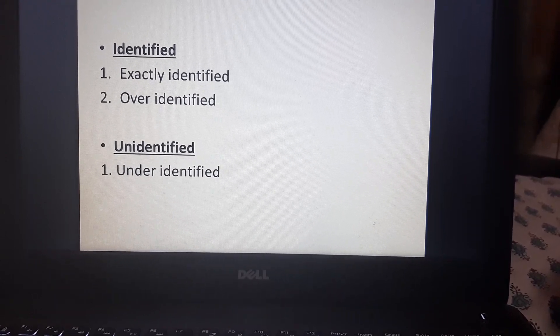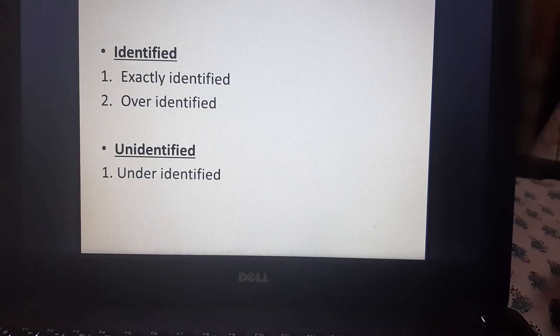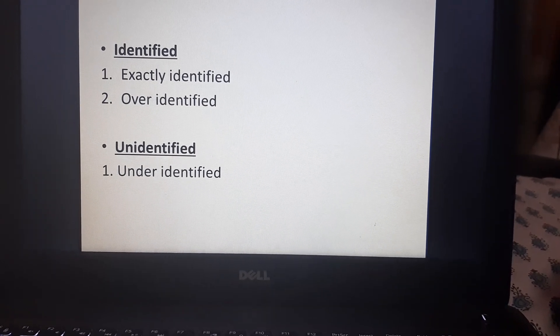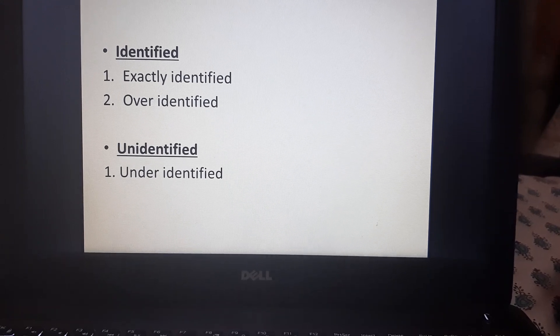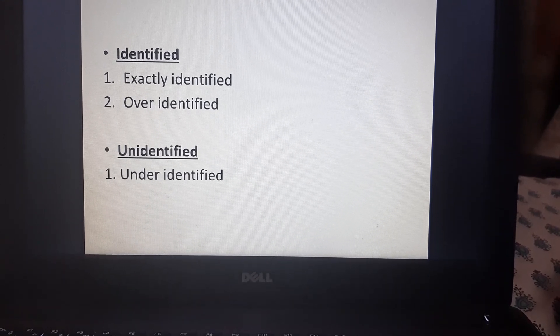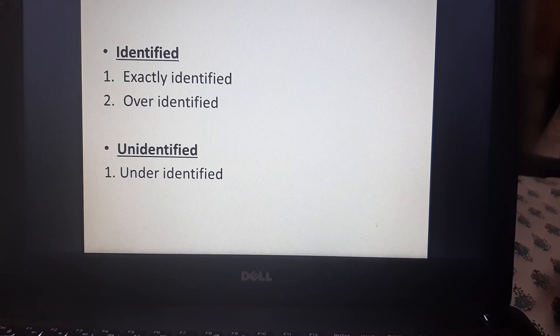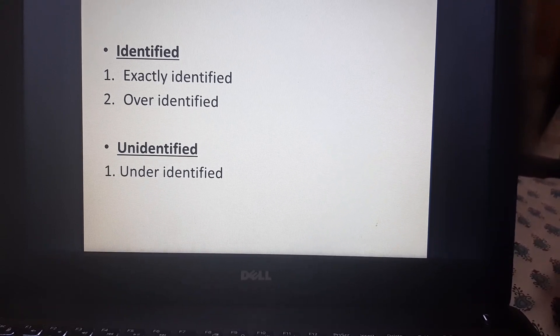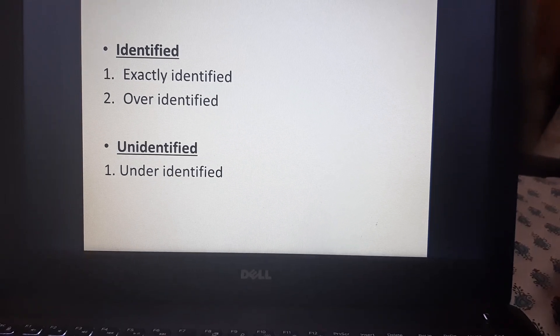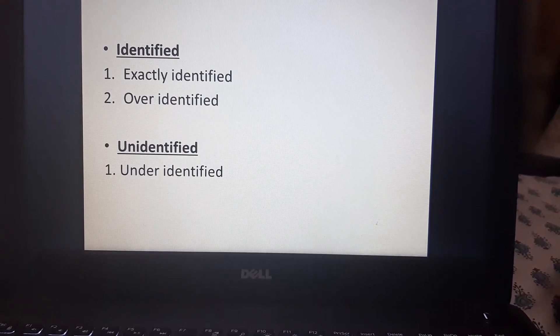An exactly identified equation is that if we are able to get a unique numerical value of the structural parameters from the reduced form parameters. And if we are getting more than one numerical value, then it is termed as over identified. And if no numerical value is obtainable, then it is unidentified.